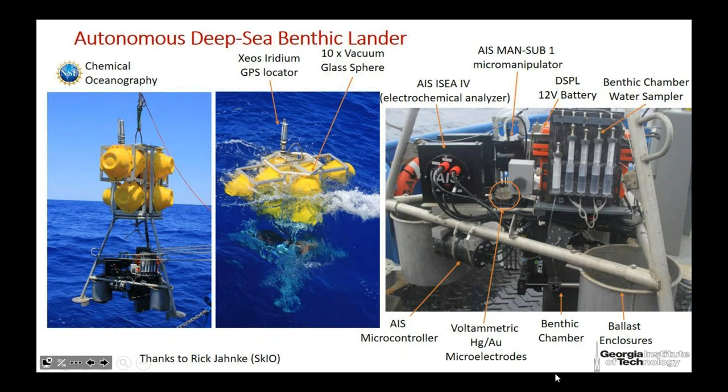The deep-sea lander is free-falling: we let it go, and it's got extra weight to sink to the bottom plus floats. When it's done with measurements, it releases the weights, pops back to the surface, and its GPS sends me an email telling me where it is so we can pick it up. In all these systems we have the same benthic chamber measuring flux, collecting water samples over time, with the micro-profiler electrodes positioned within about a foot of the benthic chamber.